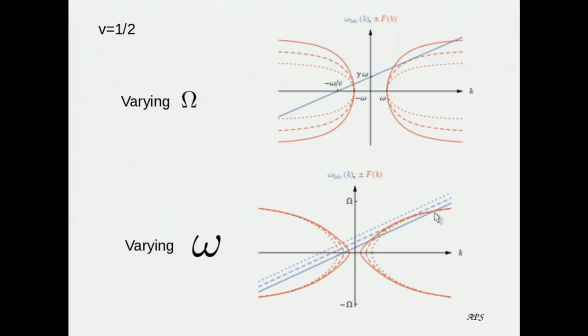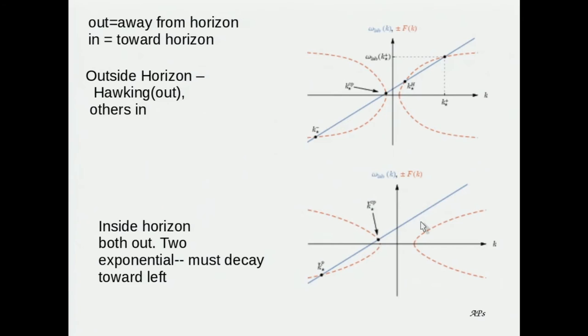As omega increases, we notice that this intersection moves off to the left, so that tells us the waves are traveling in one direction rather than the other. Inside, there are only two real solutions for k, and the other two roots of the fourth order dispersion relationship will be complex. So one has to try and match things up.